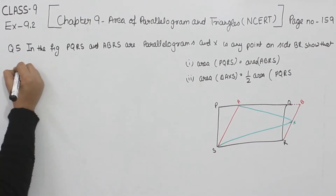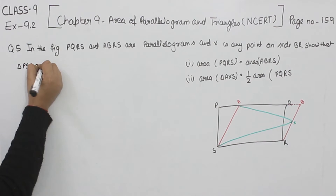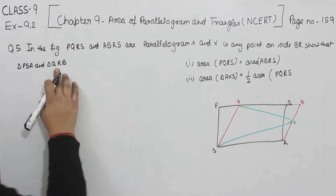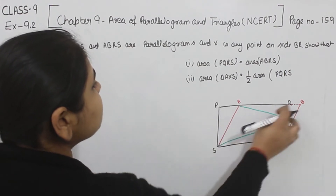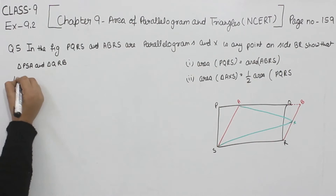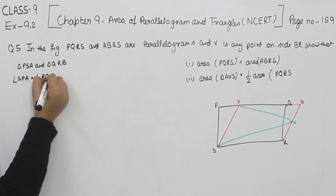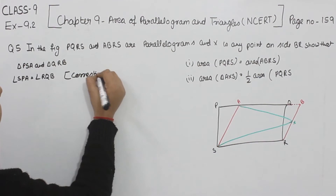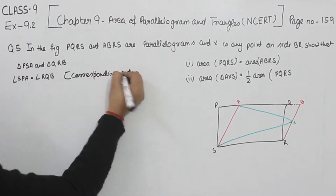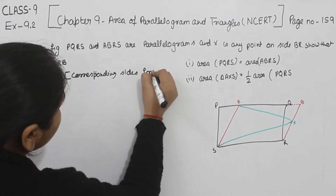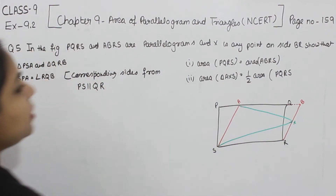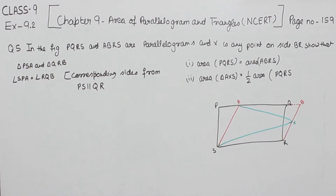To start with part 1, I am going to take triangle PSA and triangle QRB. We have these two triangles. Now, angle SPA is equal to angle RQB because they are corresponding angles — PS is parallel to QR (this is a parallelogram), and there is a transversal PB.